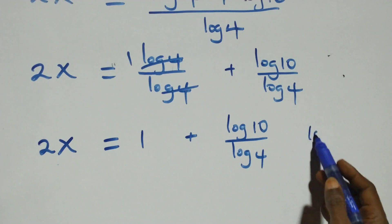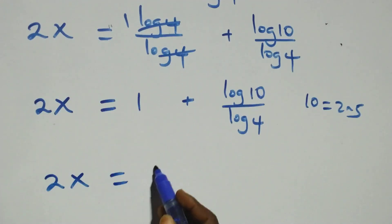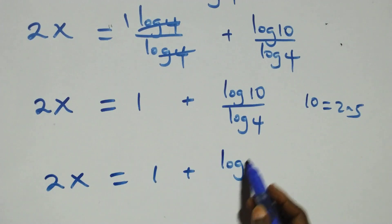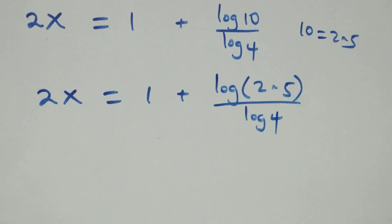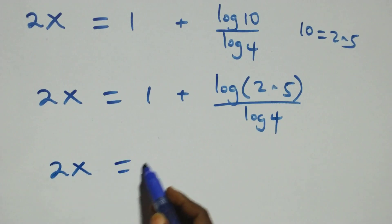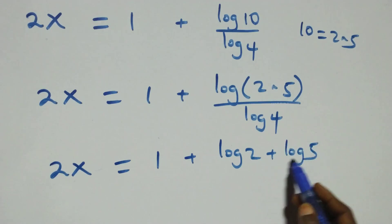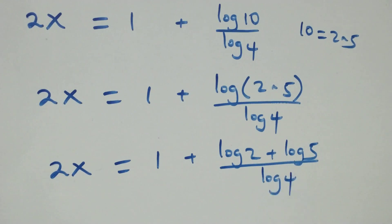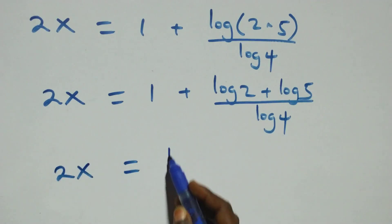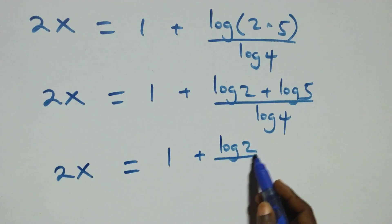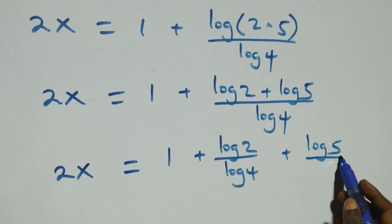Also here, we can write 10 as 2 times 5. Then what we have here becomes 2x equals 1 plus log(2 times 5) over log 4. This follows the law of logarithm as well, so we have 2x equals 1 plus log 2 plus log 5, all over log 4. Then we separate this into two fractions: 2x equals 1 plus log 2 over log 4 plus log 5 over log 4.